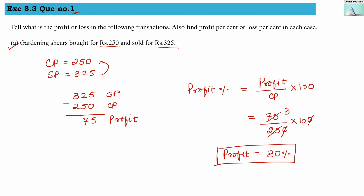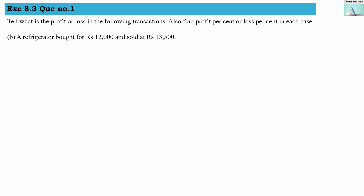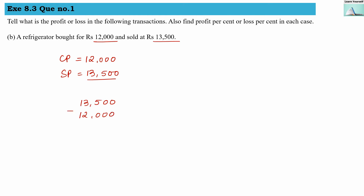So for part (a), the profit is rupees 75 and the profit percentage is 30 percent. For part (b): a refrigerator bought for rupees 12,000 and sold for rupees 13,500. The cost price is 12,000 and selling price is 13,500. Since selling price is more, this is a profit. Subtracting gives us 1,500 rupees as profit.